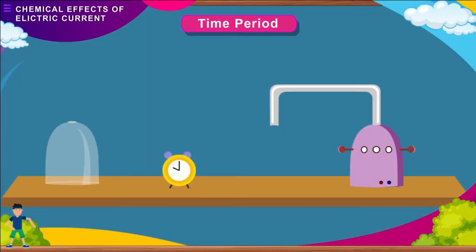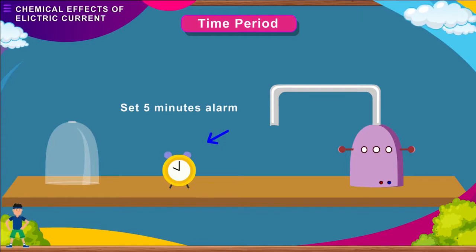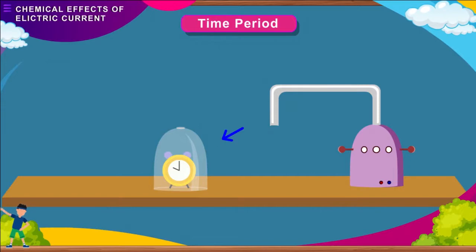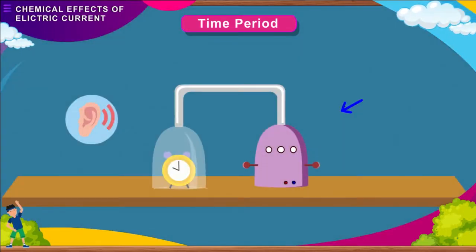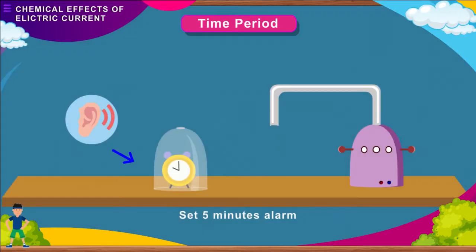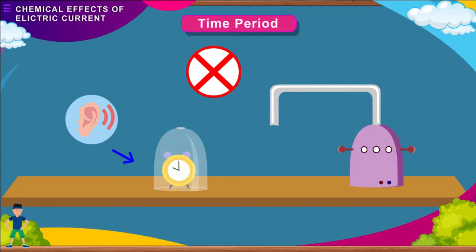Here is an activity to show that a medium is required for the propagation of sound. You need an alarm clock, an airtight jar, and a vacuum pump. Set a 5-minute alarm in the clock and place it inside the bell jar — you will hear the alarm sound. Now remove all the air from the bell jar with the vacuum pump. Set the alarm again; you will not hear it this time. It shows that when air is removed, sound is not heard, because sound cannot travel through vacuum.